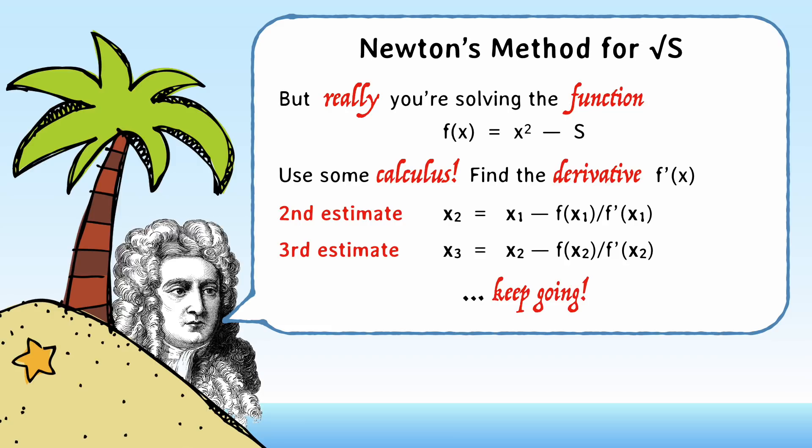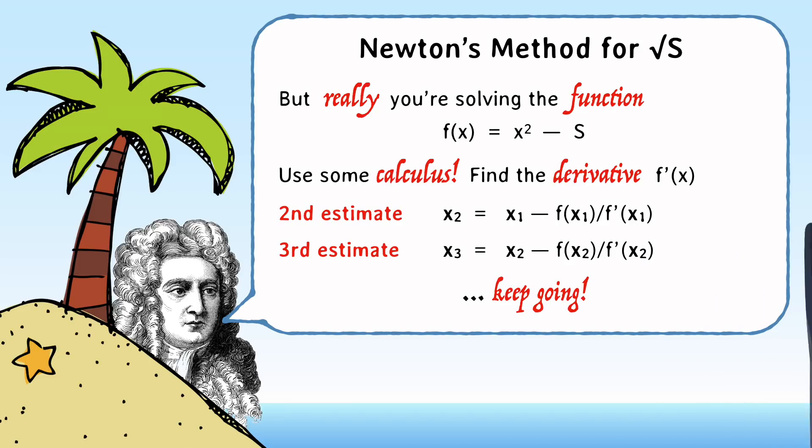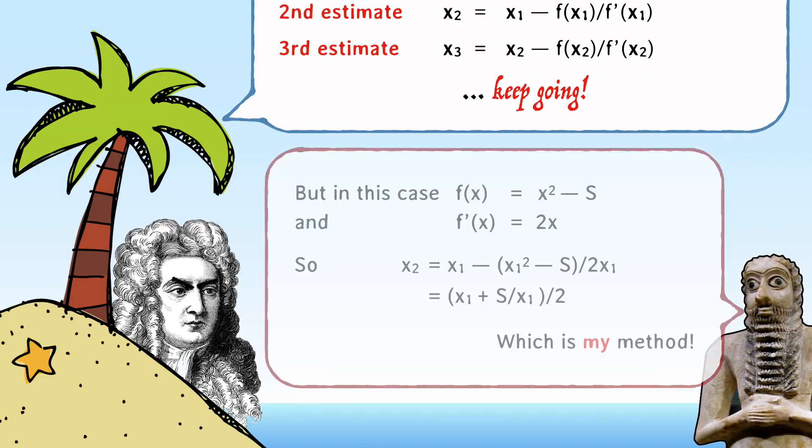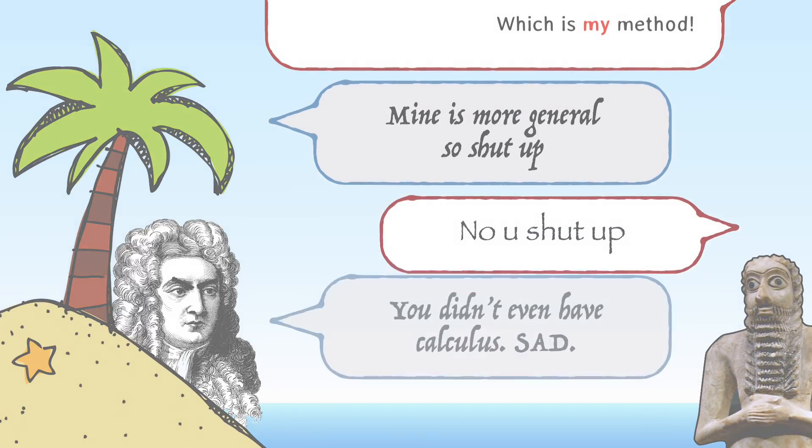Newton's method works brilliantly, as long as the function's fairly well behaved and you can actually find the derivative. And because it converges so quickly, this is effectively the method that's used by calculators and computers when they want to find square roots. Though the Babylonians might point out that, for square roots at least, Newton's method is exactly the same as the Babylonian method found 4,000 years previously. Newton would counter that, well, his method is more general, but still.